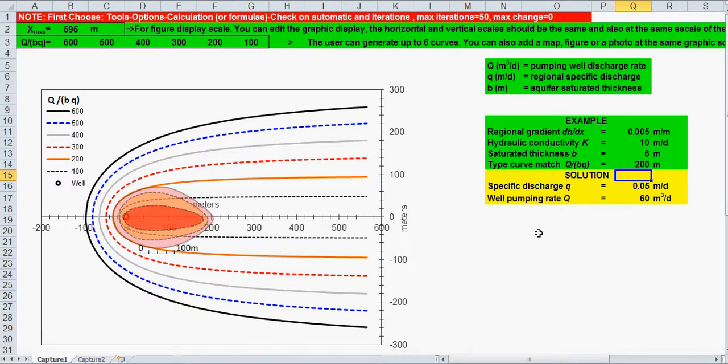You have also to check your drawdown for this pumping rate if it fits your field condition. If not, maybe you have to use two wells, three wells or even more wells.